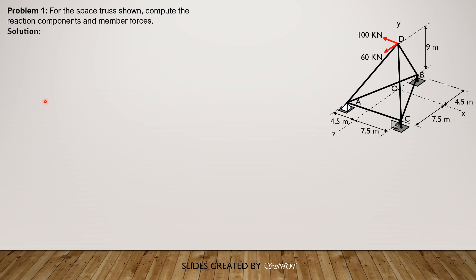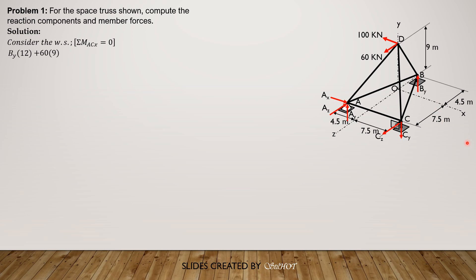We begin by assuming the direction of the component reactions. Consider the whole system and sum up moment about ACX first so that we can solve BY, always applying the right-hand thumb rule. BY is upward so it is positive: BY times 12, then 7.5 plus 4.5 is 12, plus 60 times 9. All other unknown forces act on ACX, and the 100 kN is parallel to the X axis so it has no moment. Solving, BY equals negative 45 kN, so our assumed direction is wrong — BY is downward 45 kN.